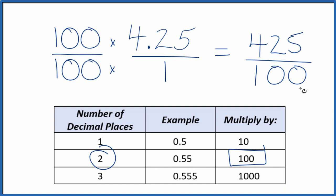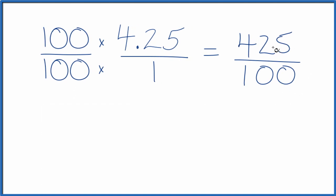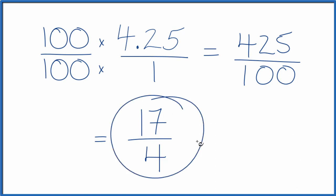We could simplify this though — let's do that. 25 goes into both 425 and 100 evenly. 425 divided by 25 is 17, and 100 divided by 25 is 4. So we can say that the decimal 4.25 equals 425 over 100, or in simplest terms, 17 over 4.